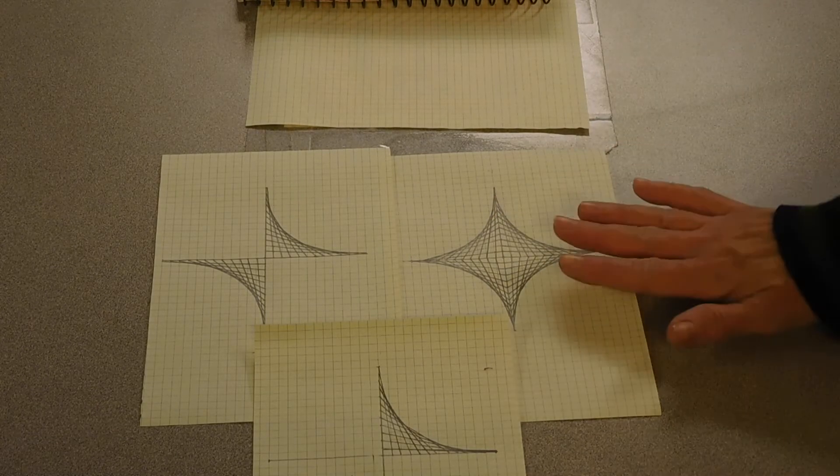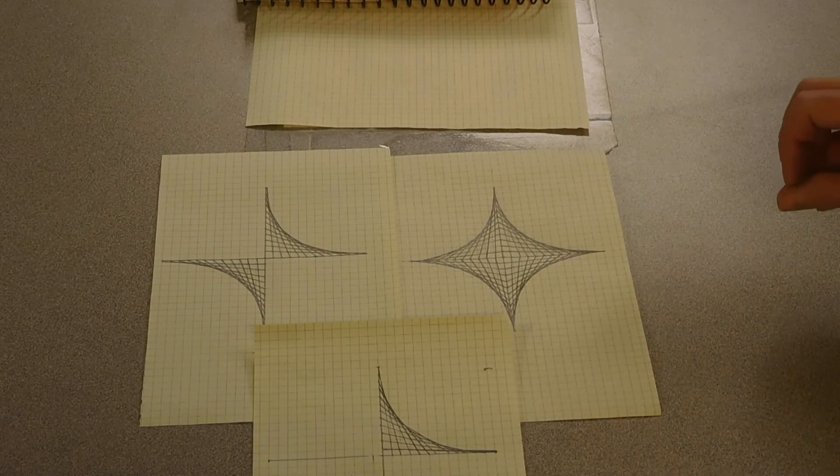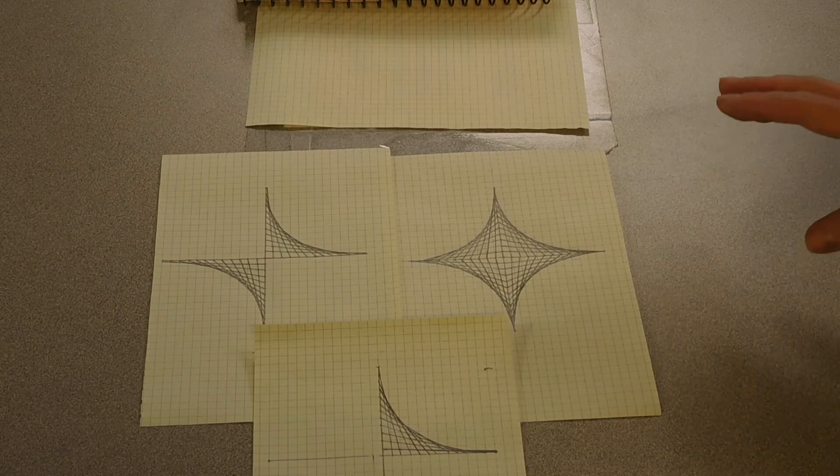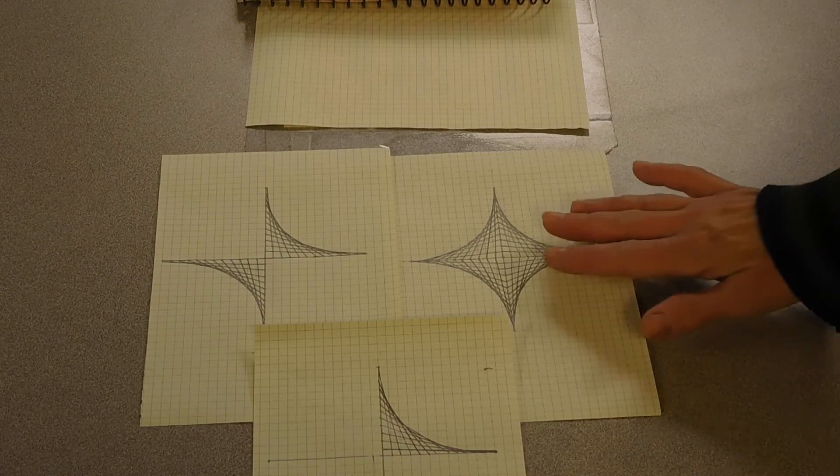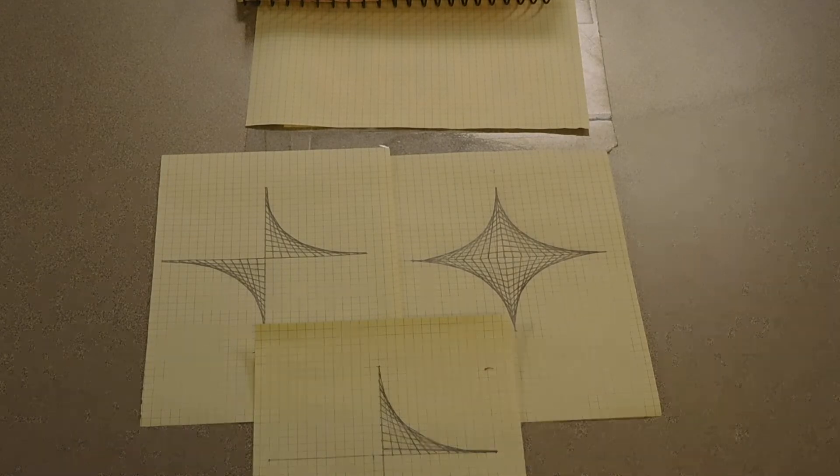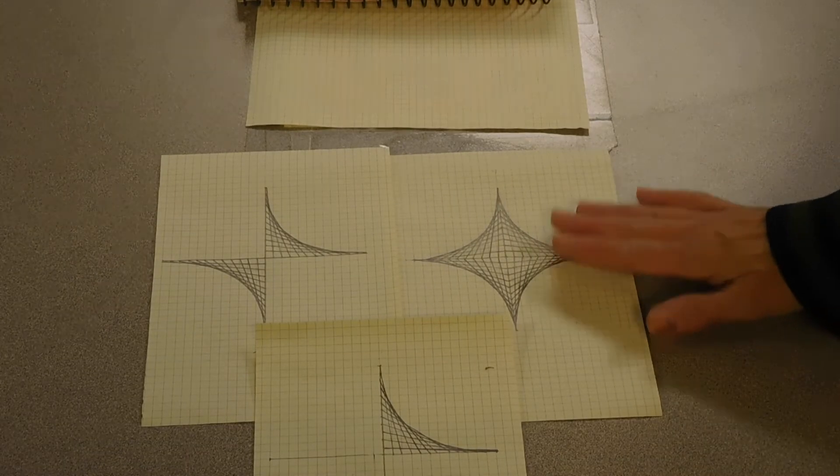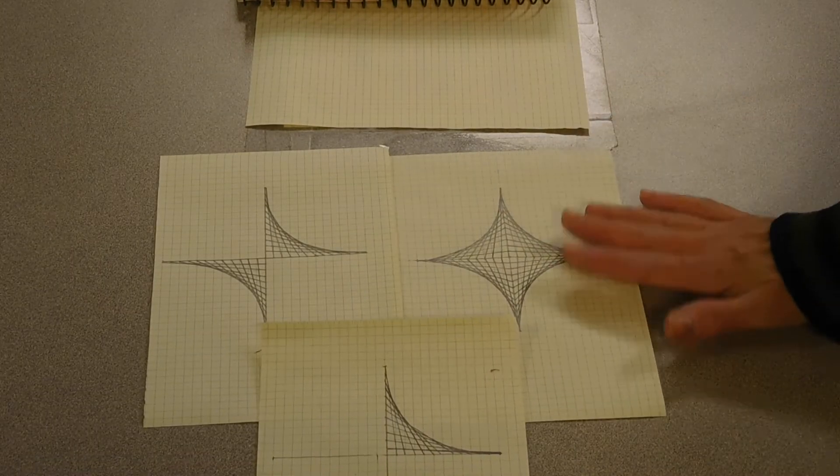Now, if you wanted, you could take these and make them into physical things. You could take bamboo skewers and glue them together in that arrangement, or you could take string and create these with string.